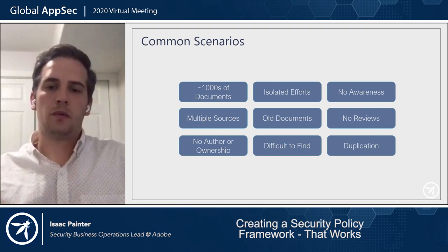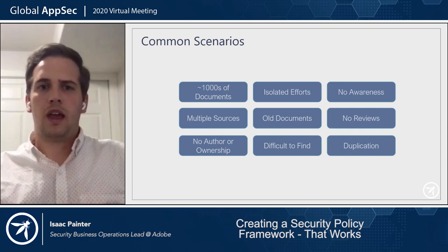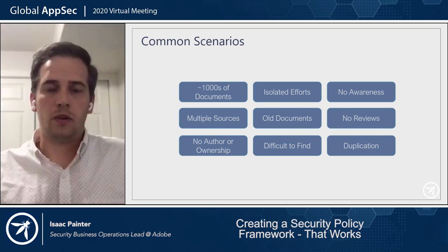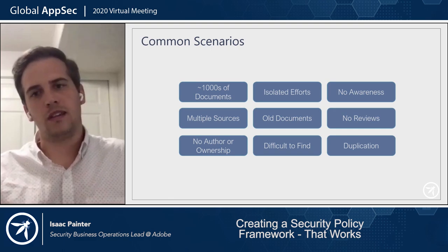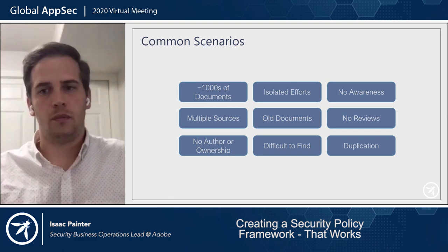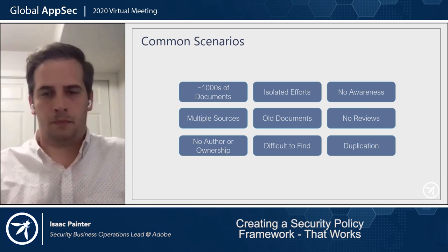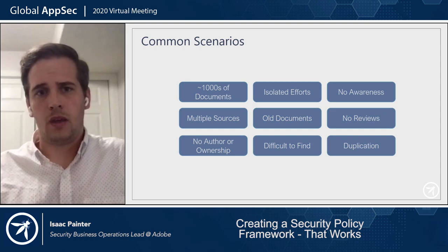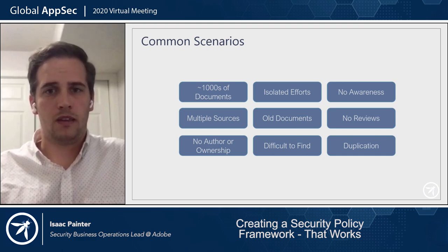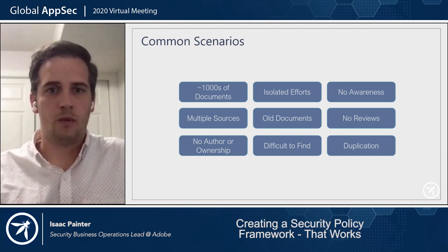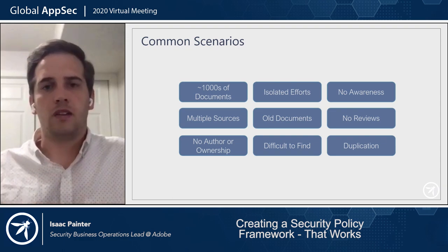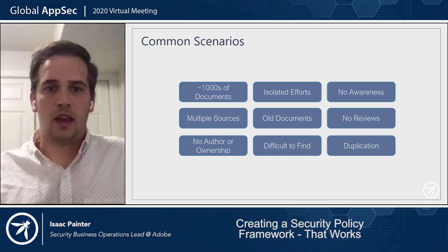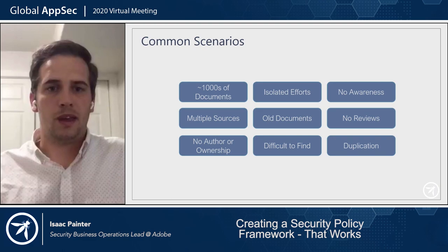Imagine you receive an email from somebody asking, do you know if we have a policy on this? You don't know, so you loop someone else in, and before you know it you've got 16 to 17 people added to a thread. One scenario is you identify there's no document in existence, and you need it right away because auditors are asking — so you create one, it's not put in a repository, and it's forgotten about.